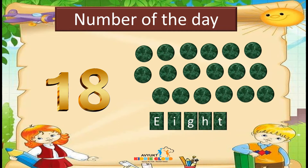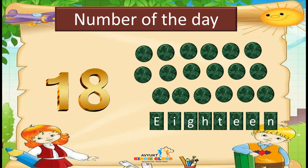Now we are not going to put T in again. This T is already there. We are just going to add E into it — E, E, N — 18. So please be watchful: 18 will have only one T.